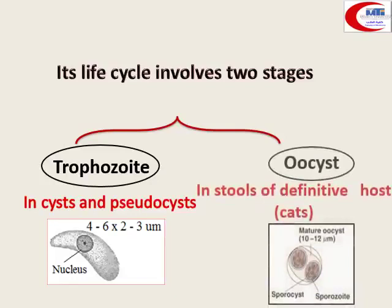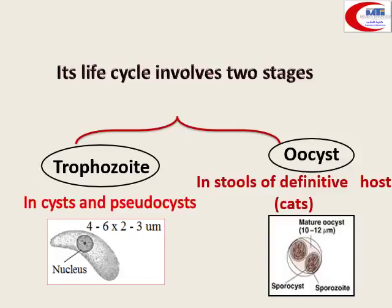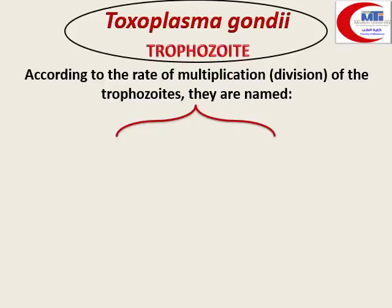The second stage is the oocyst, which is shed in the stool of the definitive host — the cat. So, we have trophozoite and oocyst as the two main stages.